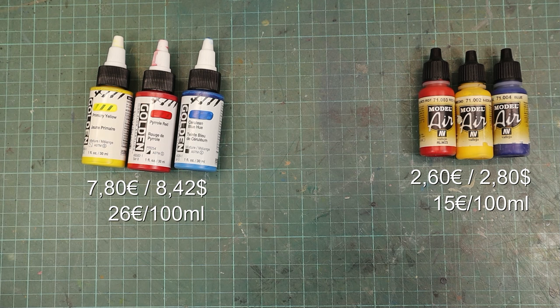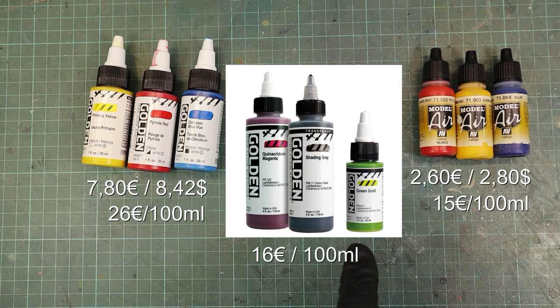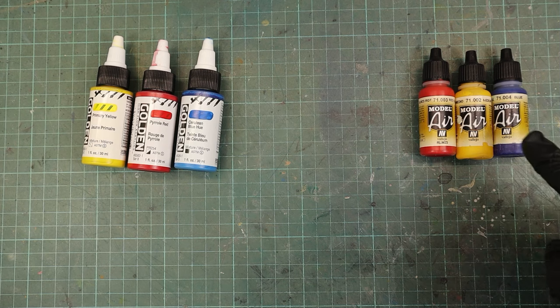However, golden acrylics are also available in larger 180 milliliter bottles, which brings the price down to 16 euros per 100 ml, making them comparable in cost. But price aside, efficiency matters too. So let's determine how far each paint can go.